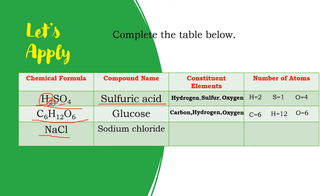The last one has the chemical formula NaCl. The name of that compound is sodium chloride. The constituent elements are sodium and chlorine — note there is no element called chloride; it is chlorine. For the number of atoms: sodium has one and chlorine has one, since there are no subscripts, meaning there is only one of each.